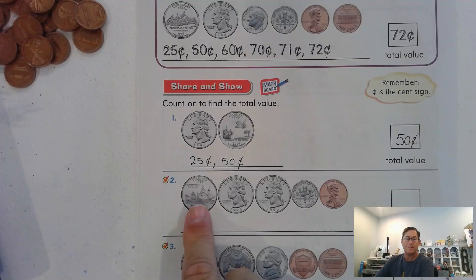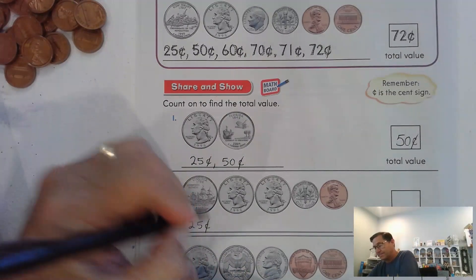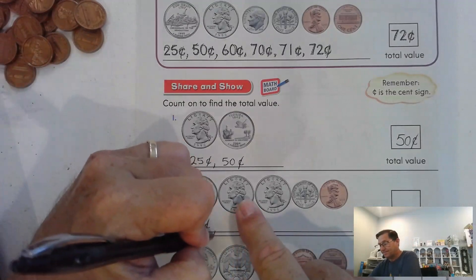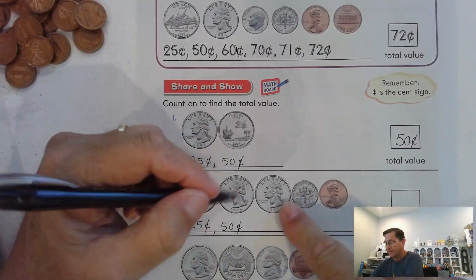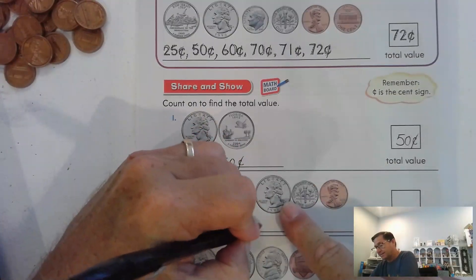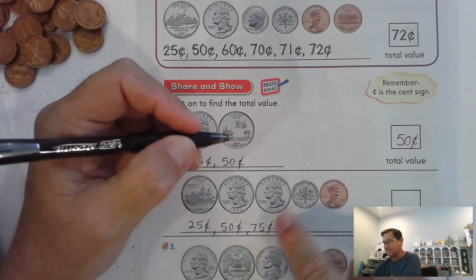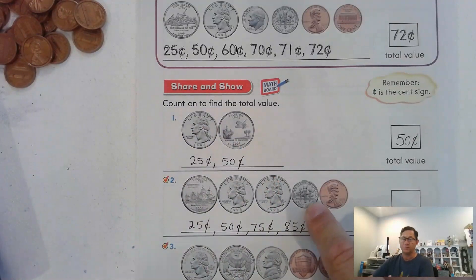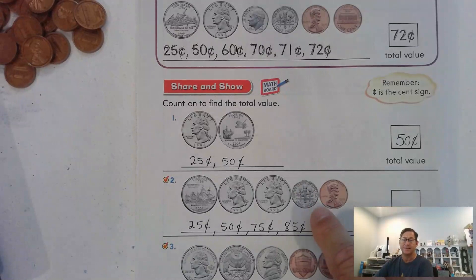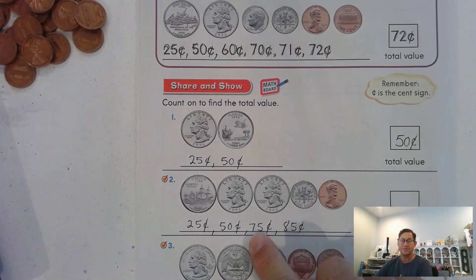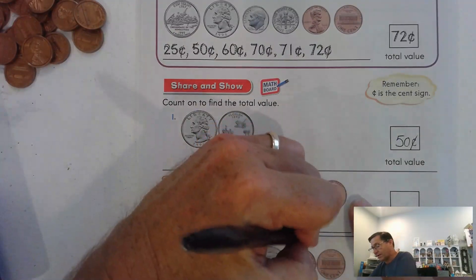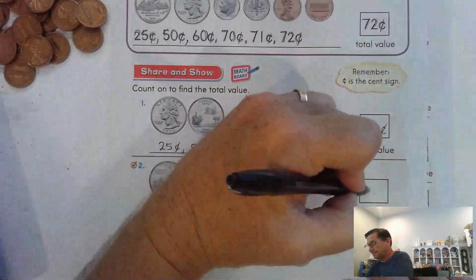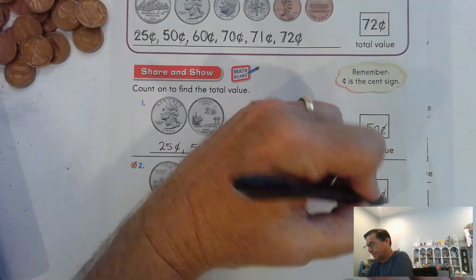Number two: 25. This is Virginia's quarter. 50, 75 cents. 75 and 10, 85. We should be able to add 10 easily to any number. So 75 and 10 more, just the 10s are changing. And then the last one, we have a penny, and that's one cent. 85 plus 1, 86.